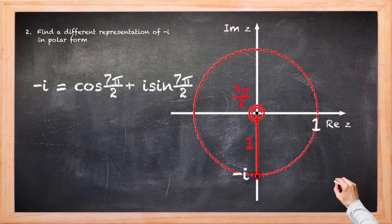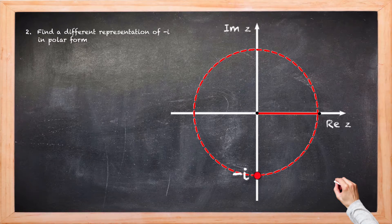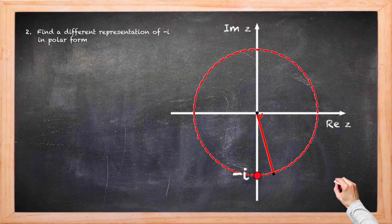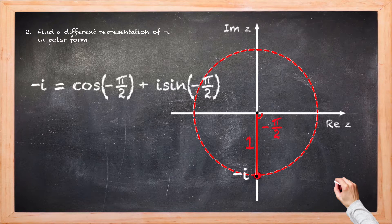Another way to find an argument for negative i is to rotate the line clockwise — a negative rotation in this case of π/2. There's another argument of negative i. So a polar form representation for negative i in this case would be cos(-π/2) plus i sin(-π/2).